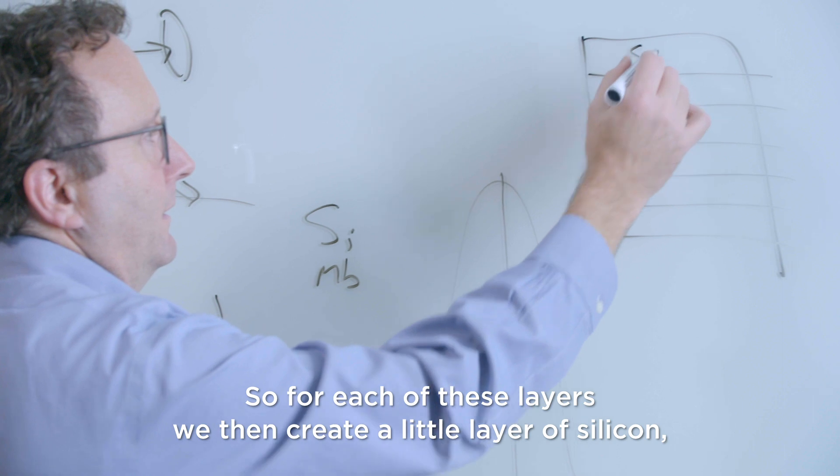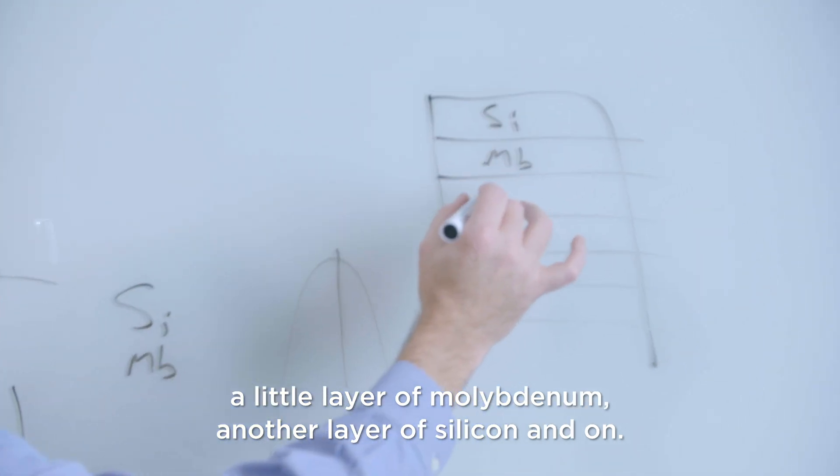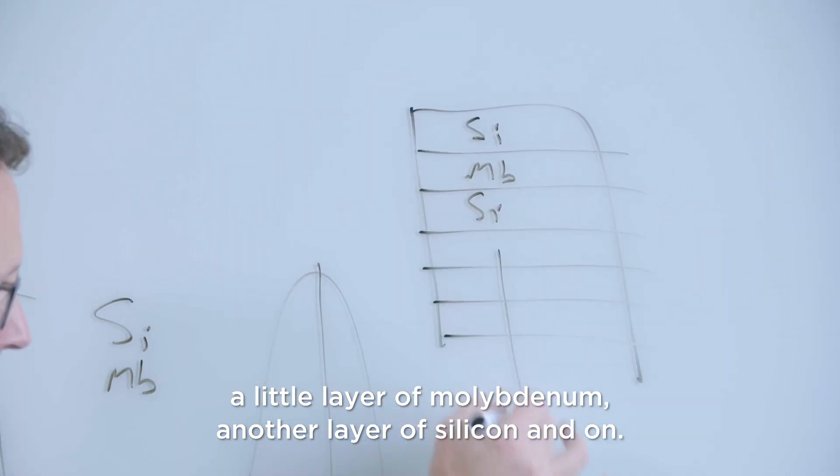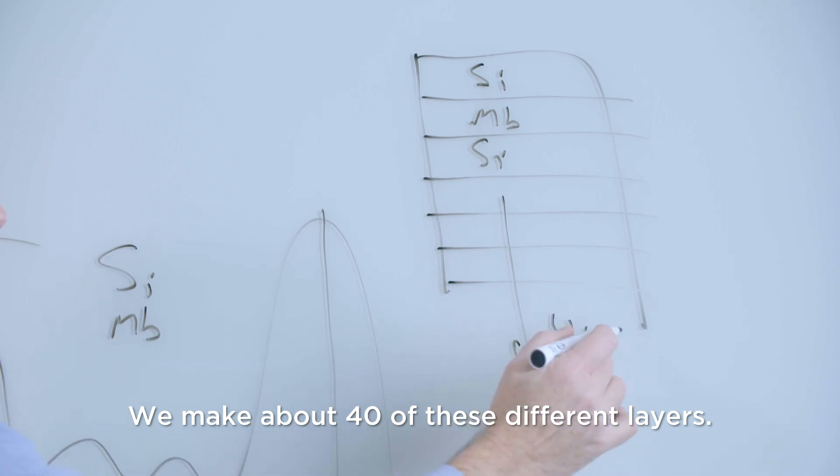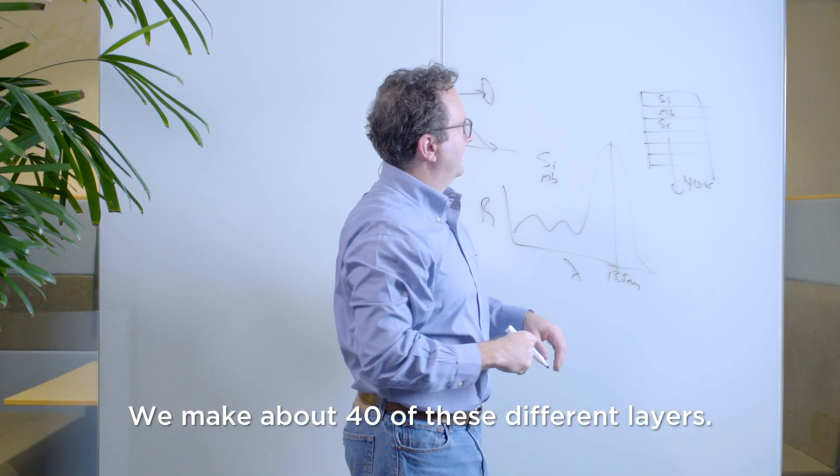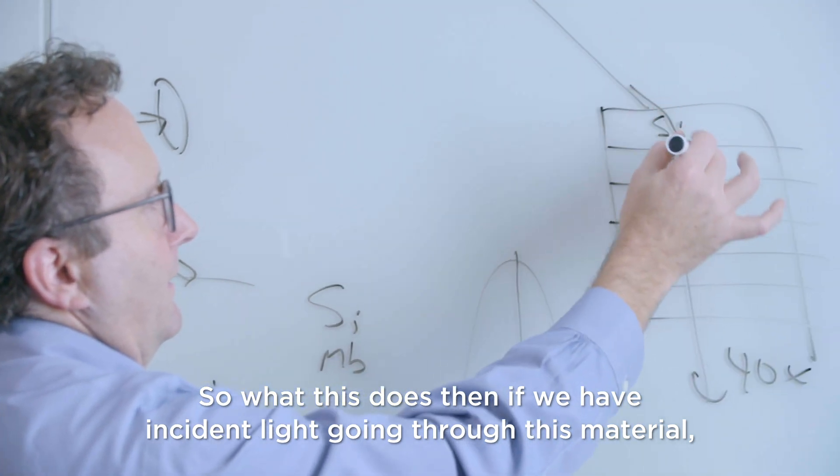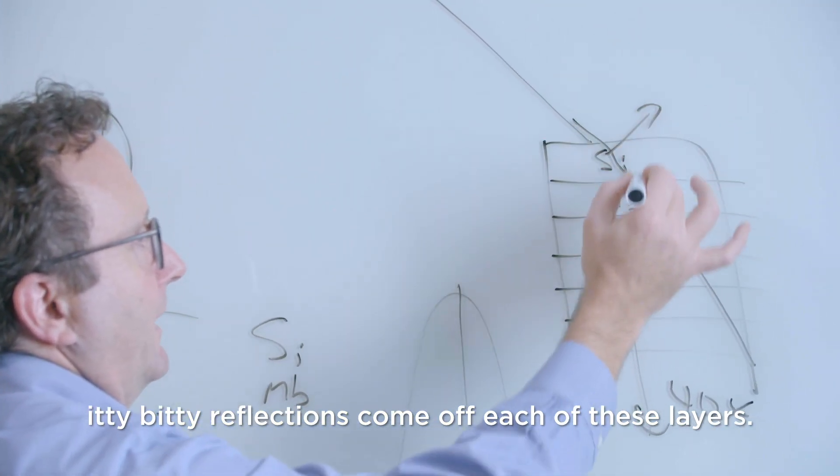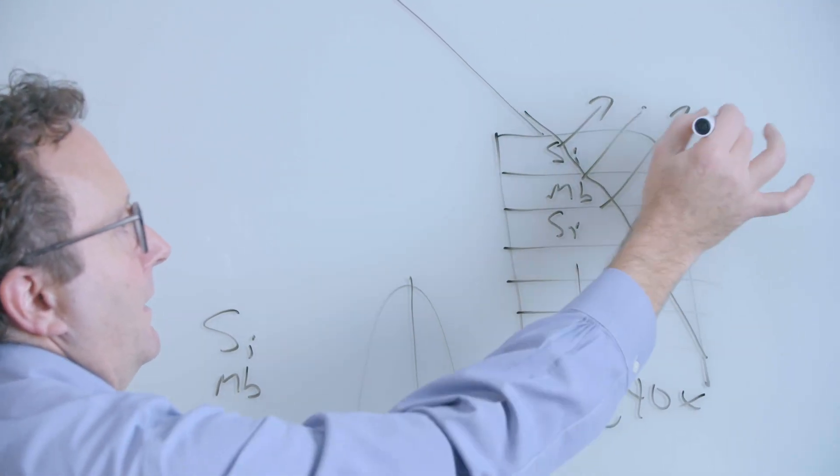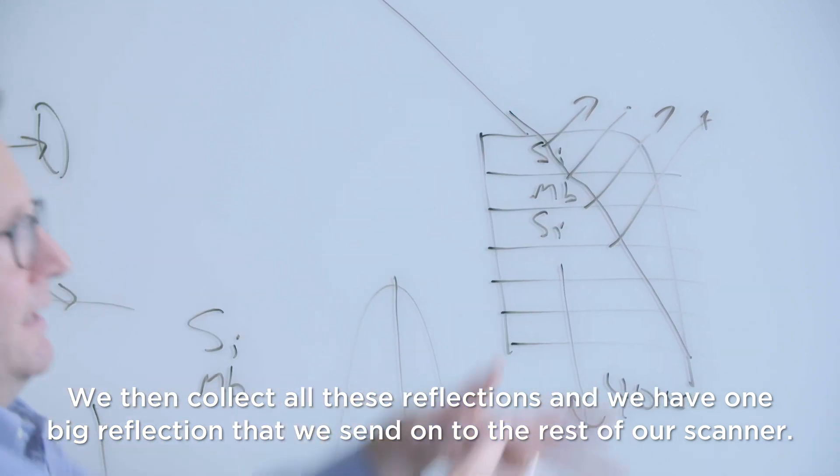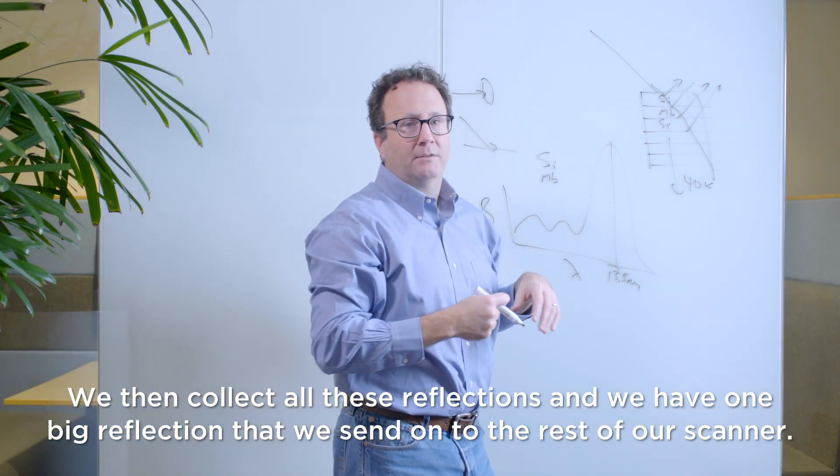So for each of these layers, we then create a little layer of silicon, a little layer of molybdenum, another layer of silicon, and on, and we make about 40 of these different layers. So what this does then, if we have incident light go through this material, little bitty reflections come off each of these layers. We then collect all these reflections and we have one big reflection that we send on to the rest of our scanner.